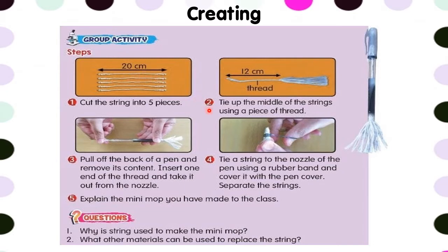Step 2: tie up the middle of the strings using a piece of thread. Step number 3: pull off the bag of a pen and remove its content. Insert one end of the thread and take it out from the nozzle.